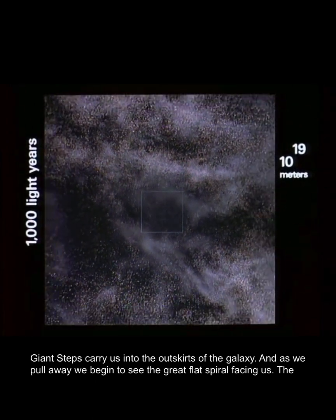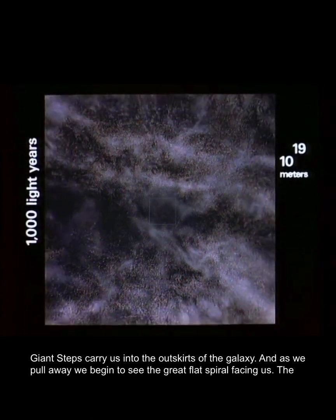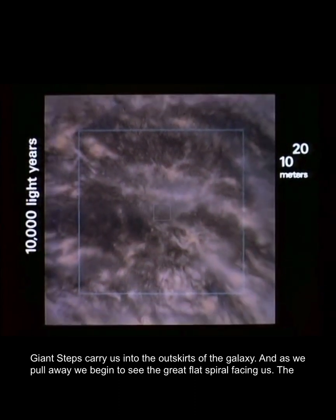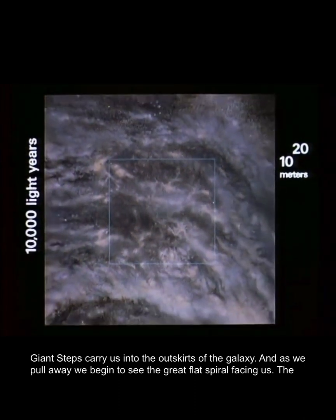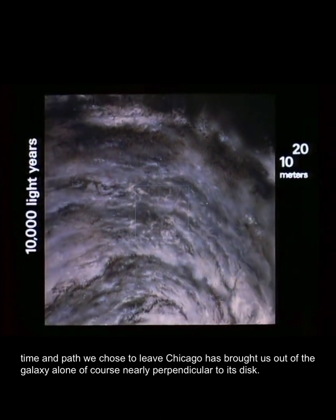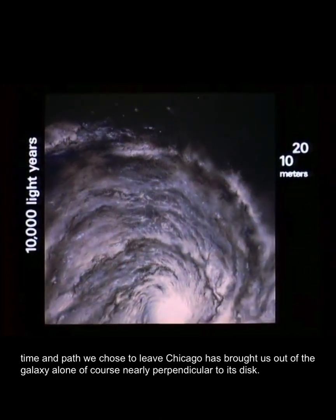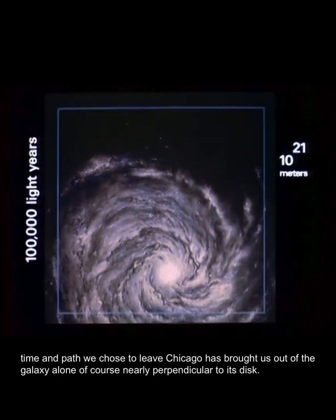Giant steps carry us into the outskirts of the galaxy, and as we pull away we begin to see the great flat spiral facing us. The time and path we chose to leave Chicago has brought us out of the galaxy, almost perpendicular to its disk.